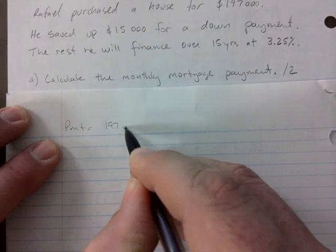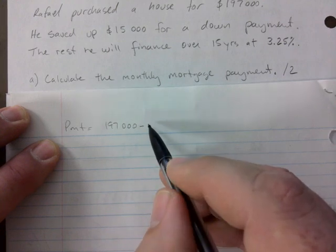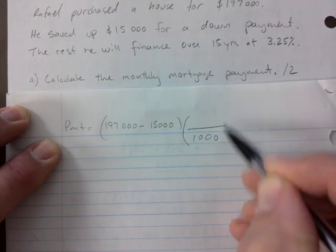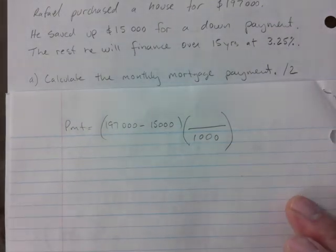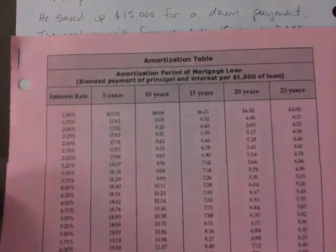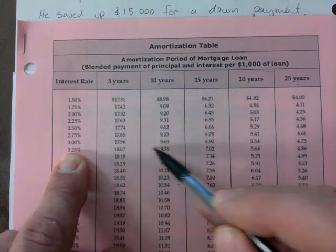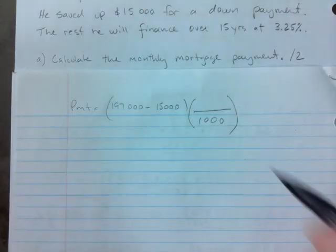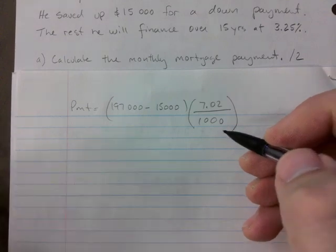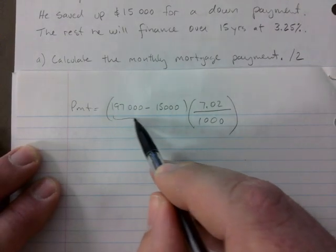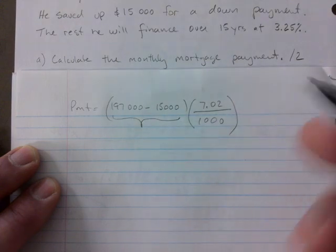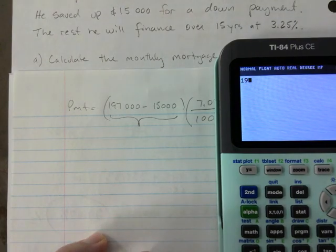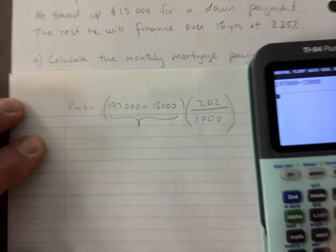For the payment, you just go $197,000 minus the down payment, which is $15,000. You multiply that by the rate over a thousand. It's 15 years at 3.25%, so you match 3.25% over 15 years, so that's 7.02. Okay, I just want to make sure I don't pick the wrong one. So this is your setup. Let's figure out this part here right away because that is your mortgage. Okay, so $197,000 minus $15,000, that's $182,000.